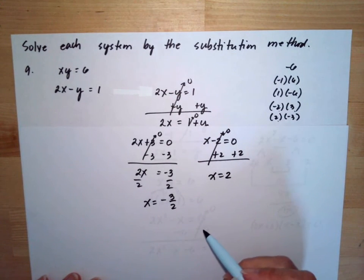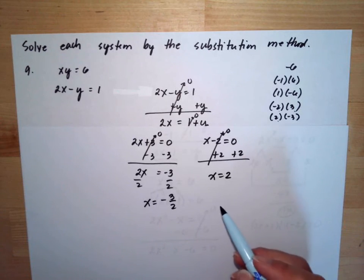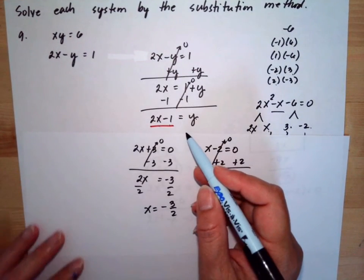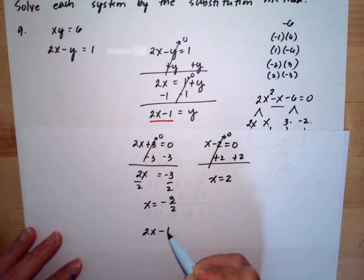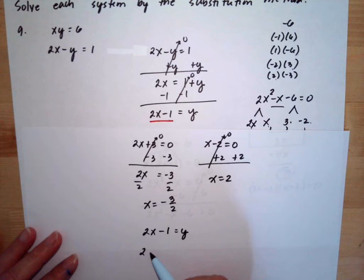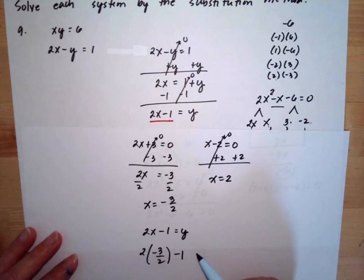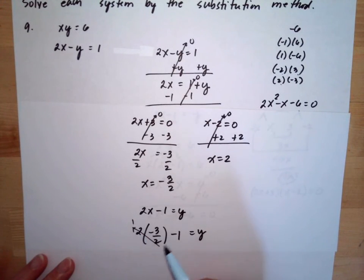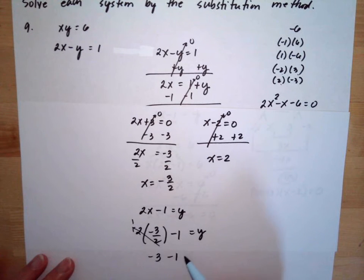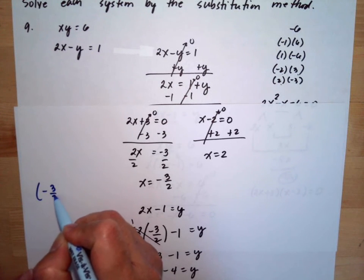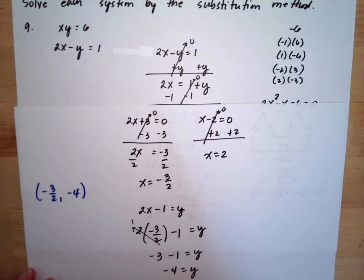Now we need to substitute these x values into our equation y equals 2x minus 1 to solve for y. Substituting x is equal to negative 3 halves: y equals 2 times negative 3 halves minus 1. The 2 and 2 cancel, giving negative 3 minus 1, so y equals negative 4. The first solution is (negative 3 halves, negative 4).